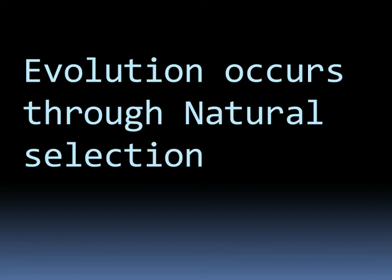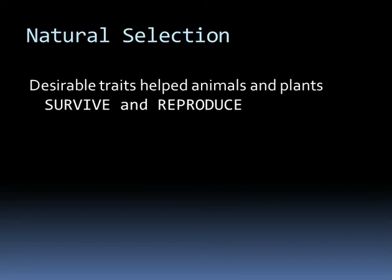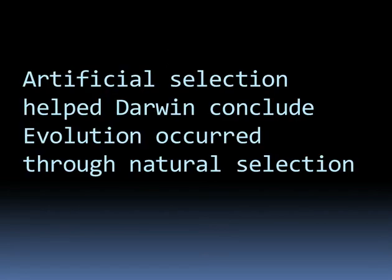He concurred that in nature, the desirable traits were those that ensured survival and reproduction. This is how the process of artificial selection influenced Darwin's thinking and helped him lead to the theory of evolution through natural selection.